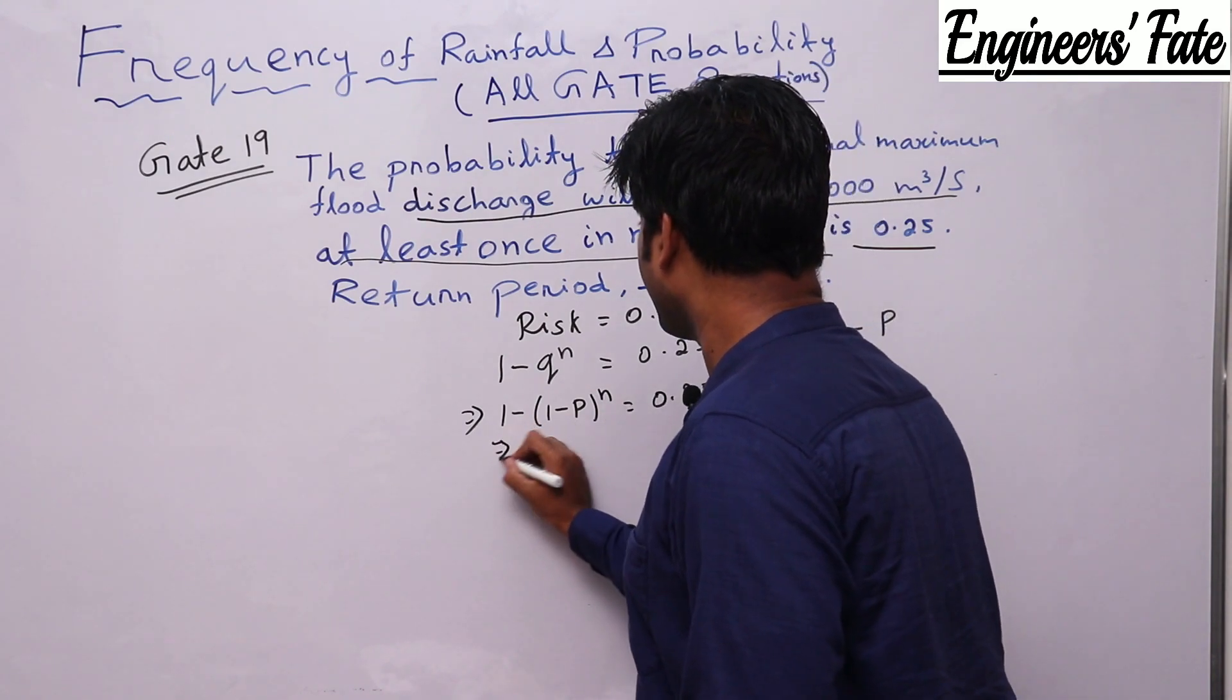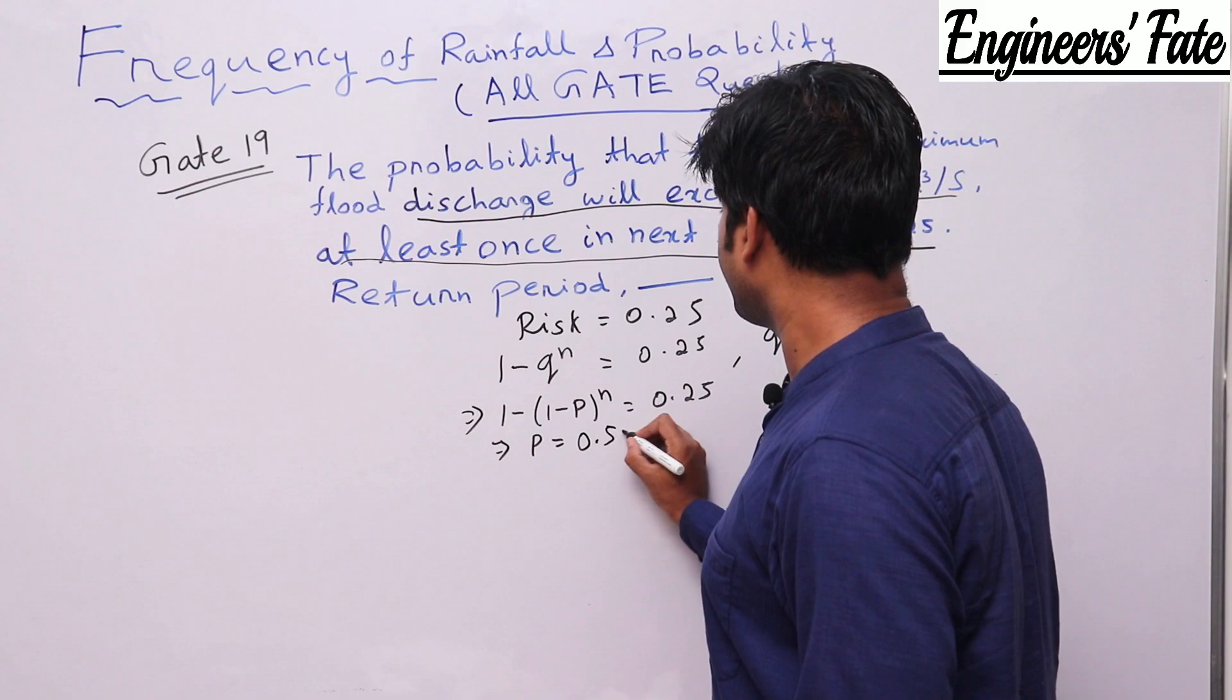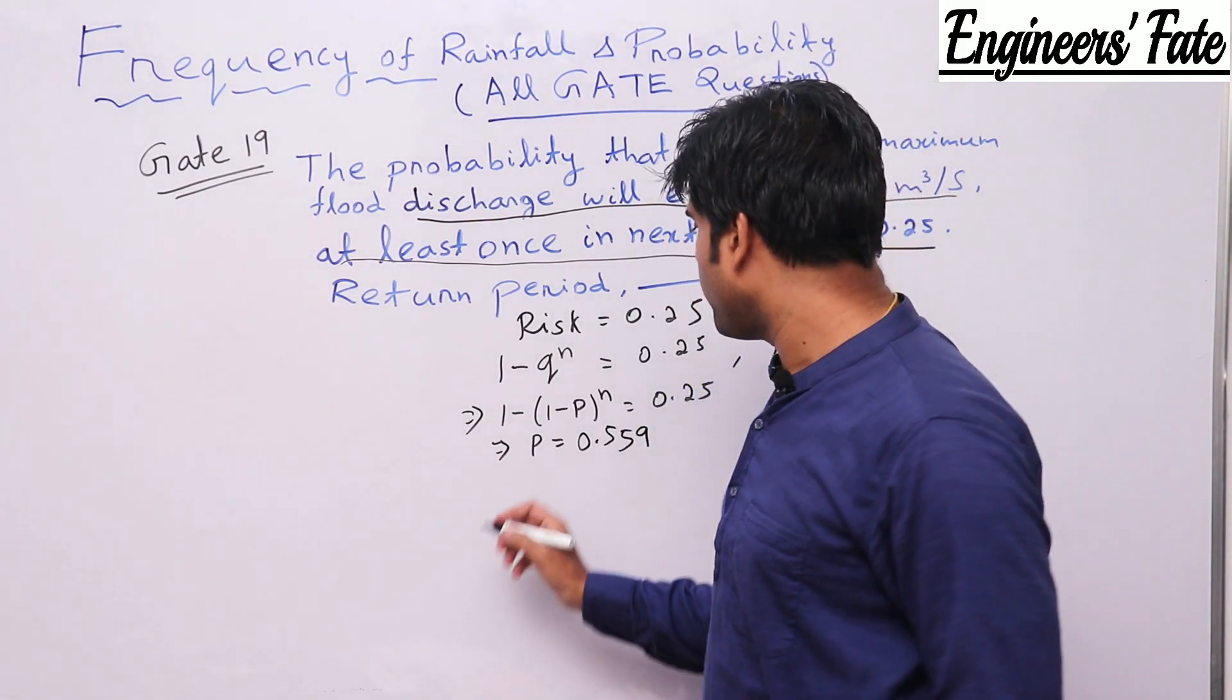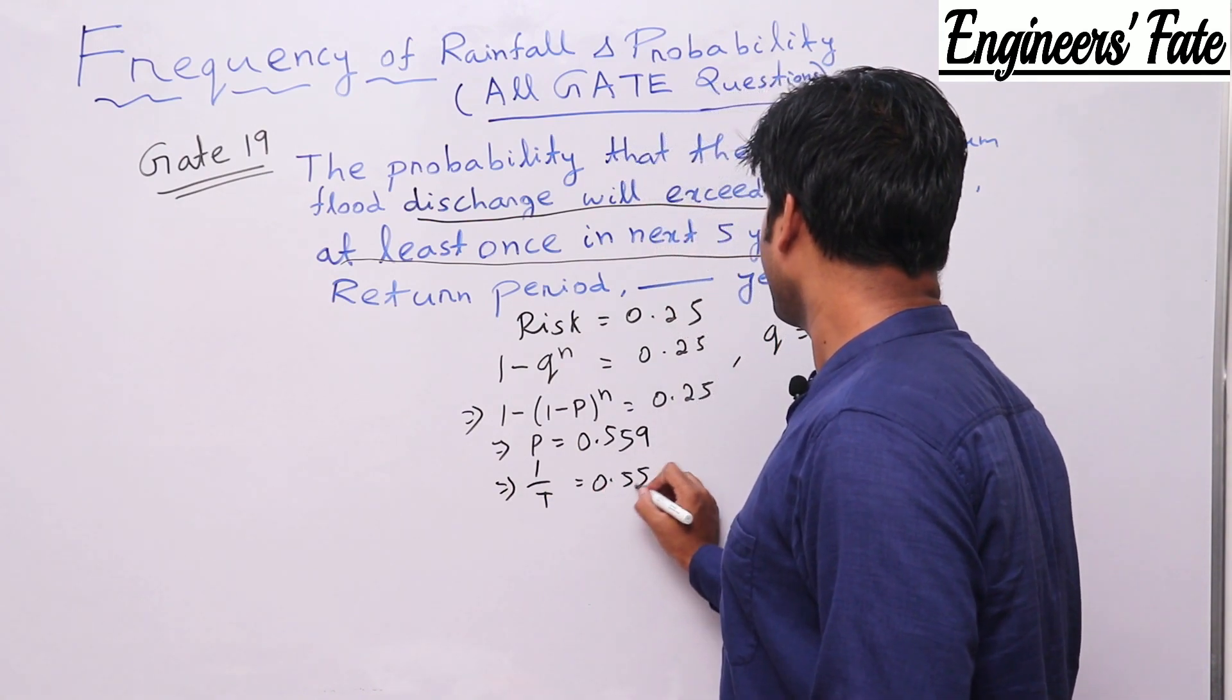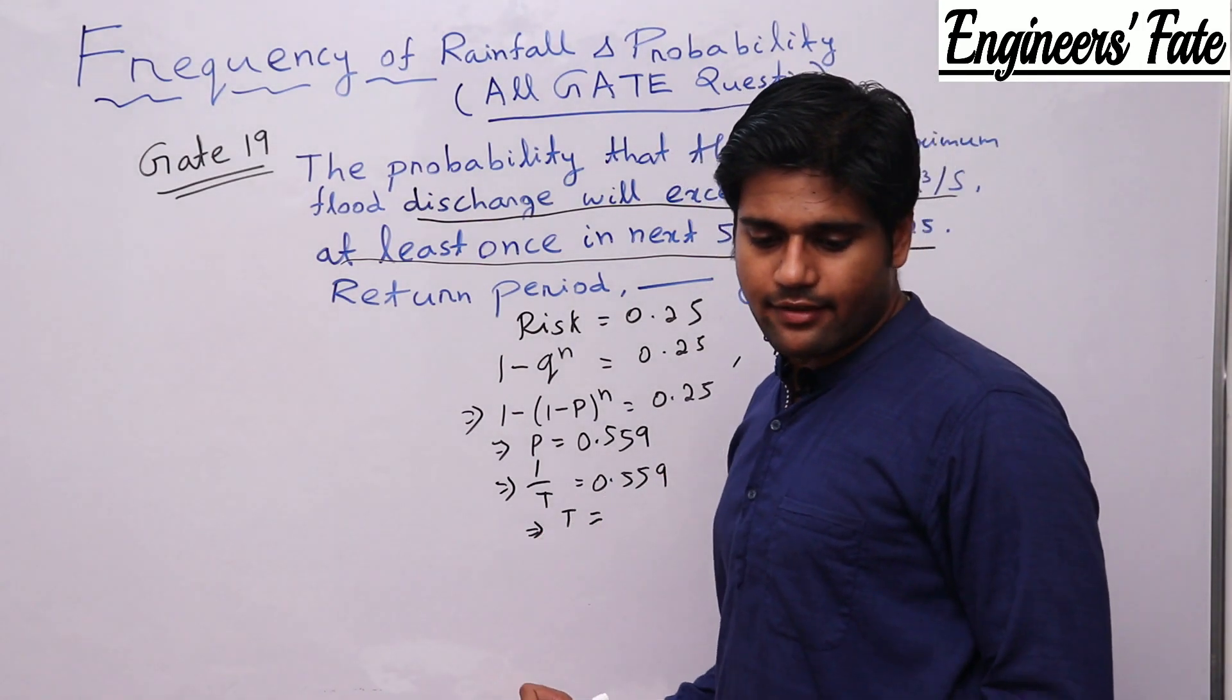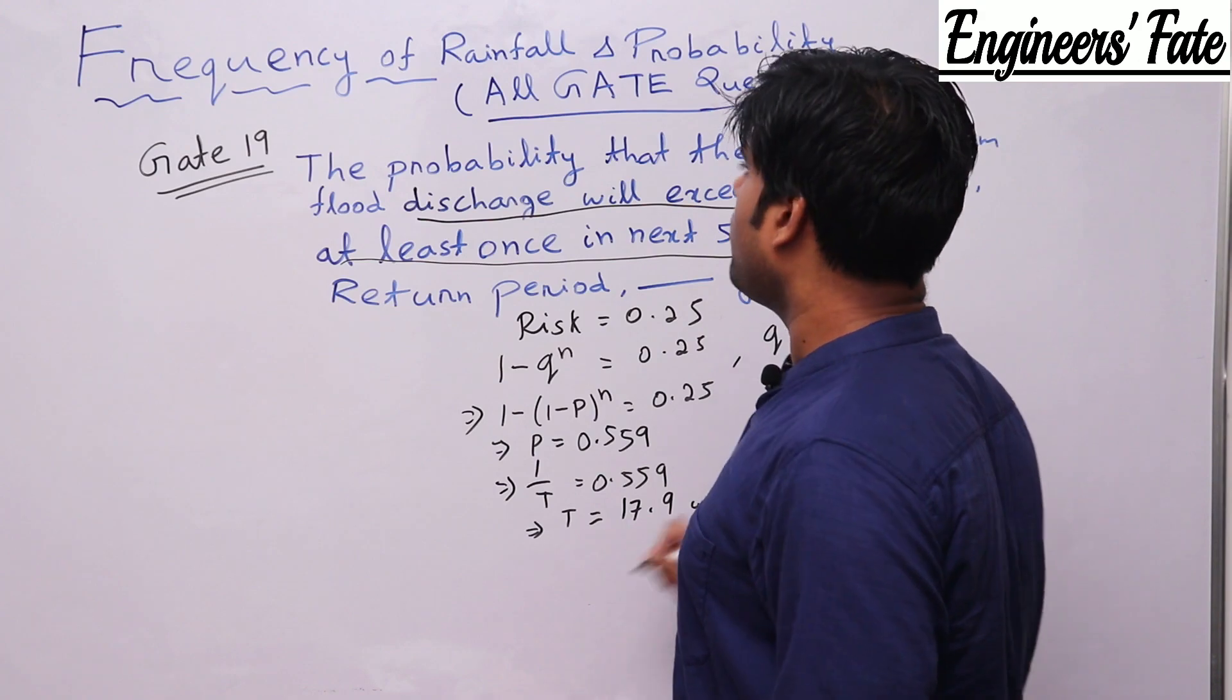So if you can calculate from a calculator you will find P equal to 0.559. We know the P then we also know that P equal to 1 by T. 1 by T equal to 0.559. So if you further calculate you can find T equal to 17.9 years.